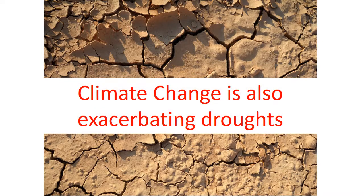But climate change is also likely to make drought conditions worse. Because warmer air can hold more water vapor, more moisture from the soil and from plants is sucked into the atmosphere through evaporation and transpiration, even during dry periods with little rain, further desiccating dry landscapes.